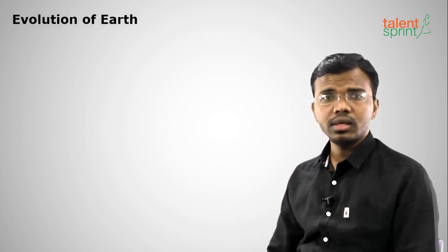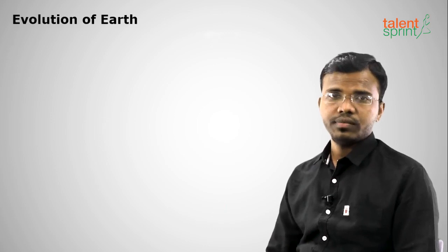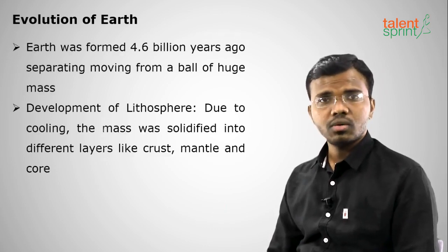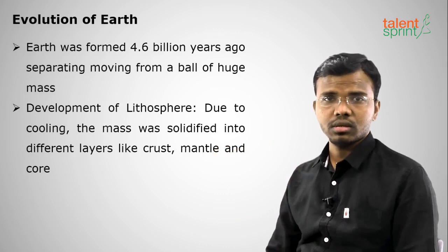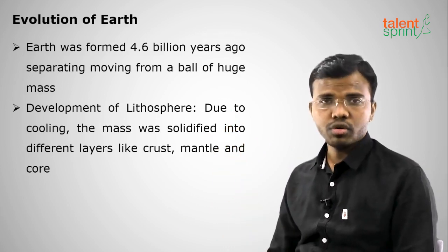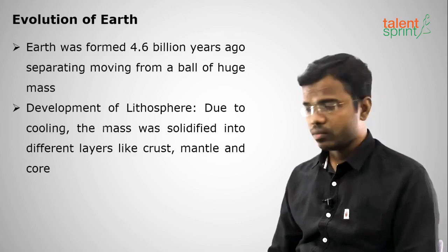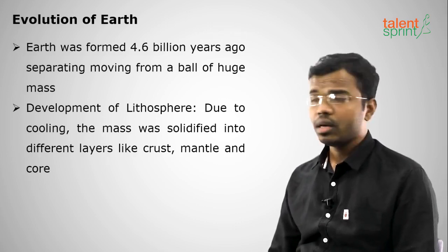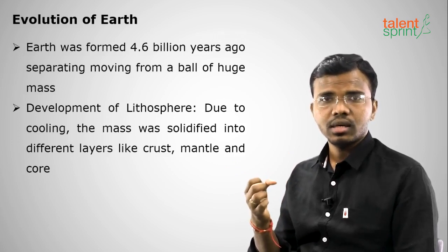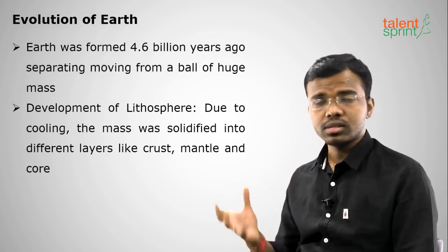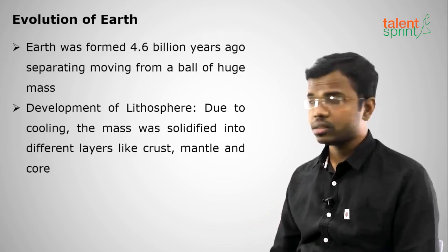Moving on — how the evolution of the Earth started, how the layers of the Earth formed, how the atmosphere, hydrosphere, and lithosphere evolved. Earth was formed around 4.6 billion years ago, which was disintegrated from a huge tiny ball — that is the Big Bang theory, which explains this formation of Earth. After the parts separated, the surface began developing.